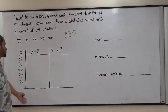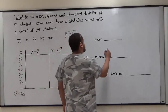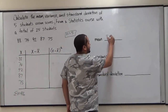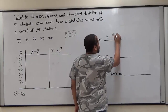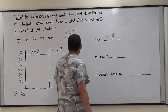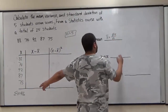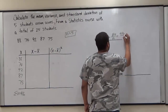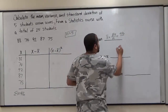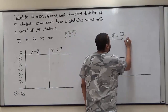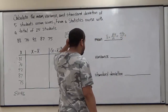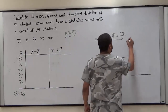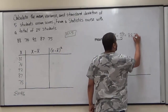Now that we have the sum of x, we can continue to the mean itself. The mean — x-bar — is equivalent to the sum of x divided by n. In our case, the sum of x is 416 and our n value is 5. Dividing gives us a terminating decimal with the value of 83.2. So here we have our mean.